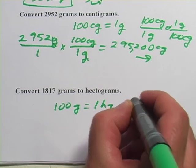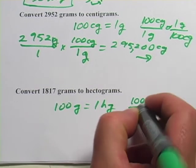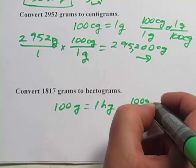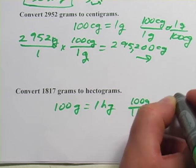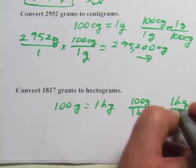And make a conversion factor under that, 100 grams to 1 hectogram, or 1 hectogram to 100 grams.